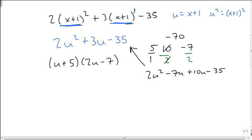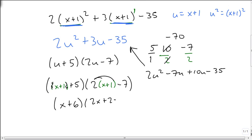All we need to do now is replace the u with x plus 1. So we have x plus 1 plus 5 and 2 times x plus 1 minus 7. We don't really like parentheses inside parentheses, so we need to work farther. Because there's only a 1 in front, I can get rid of these parentheses. x plus 1 plus 5 is x plus 6. But for the second one, I have to distribute first. 2x plus 2 minus 7, and then combine like terms to get 2x minus 5.